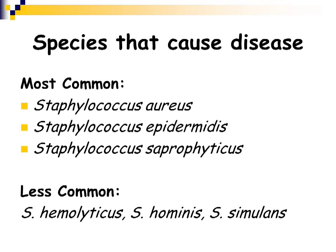In medical or clinical microbiology, we are only going to focus on the species that actually cause human disease. The most common species of staphylococcus that cause human disease are aureus, epidermidis, and Saprophyticus. Less commonly associated with disease are Staphylococcus hemolyticus, Ominous, and Simulans.